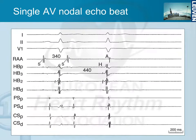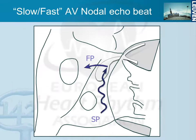Sometimes during conduction over the slow pathway — here with an AH interval of 440 milliseconds — you also see some atrial activity occurring at the end, which is what we call an AV nodal echo beat. We have conduction over the slow pathway, but we do not only conduct to the ventricles over the HIS bundle — we also conduct back to the atrium over the fast pathway. This depends on the delay over the slow pathway, because the fast pathway, which was blocked antegradely, has to recover from that earlier activation so that it is able to conduct retrogradely. The atrium also has to recover from the previous beat and be excitable again — only then you will see this echo beat.